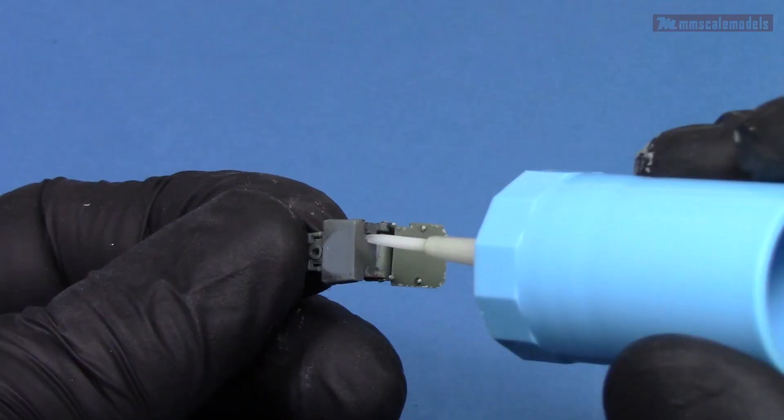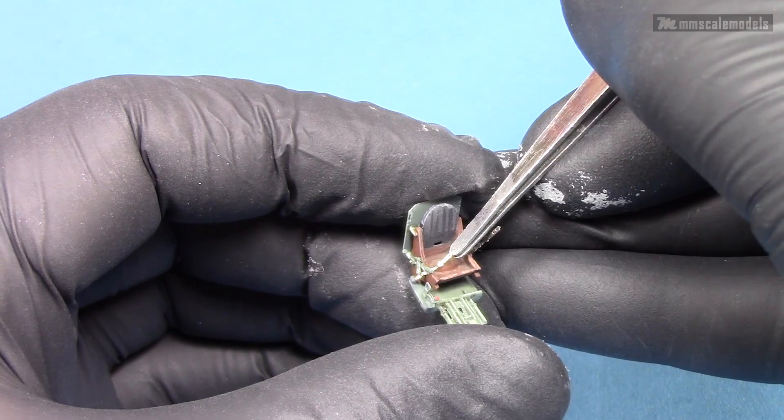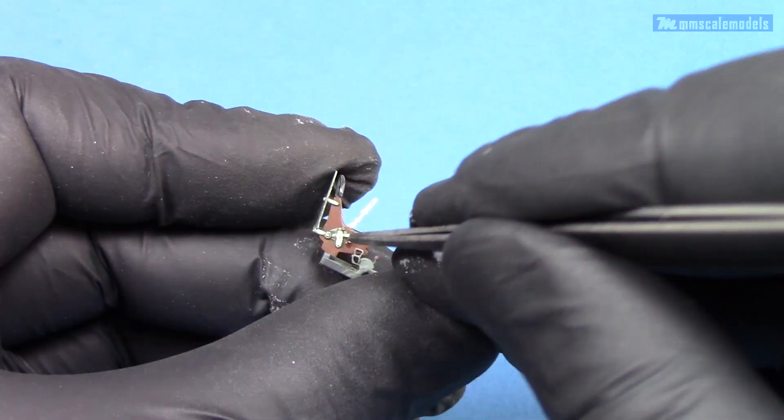First I'm going to attach the seat to the cockpit floor. The fit between those two parts is good and very secure. Next task is to attach the lap belts. The left one is pretty simple and needs to be super glued to the seat.